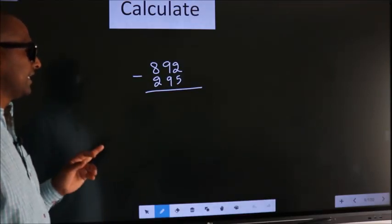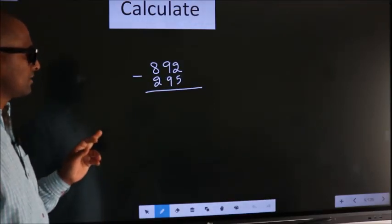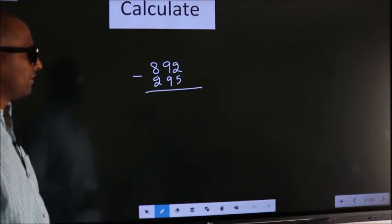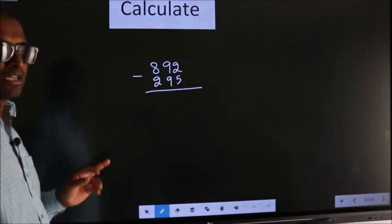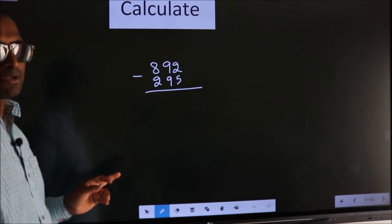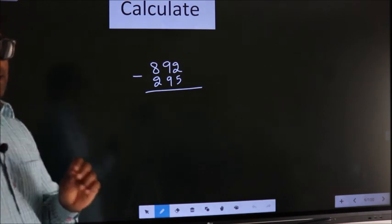Calculate 892 minus 295. How do we calculate this faster?